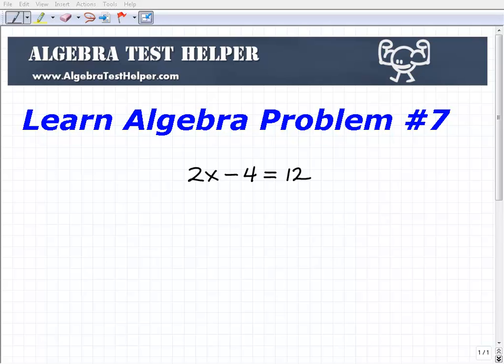Welcome to this practice problem from Algebra Test Helper. We're going to solve this basic equation 2x minus 4 equals 12, and hopefully you've mastered the real simple type of equations.